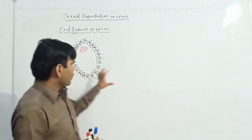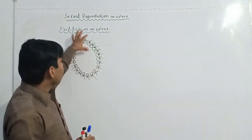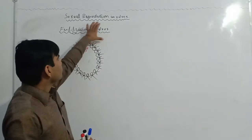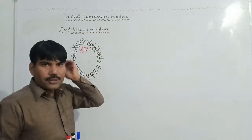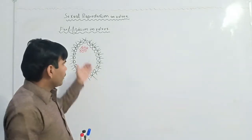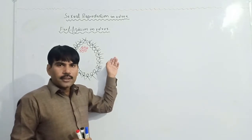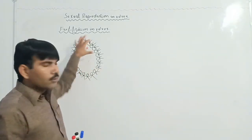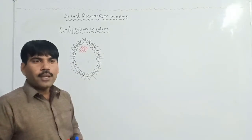In the last lecture we studied about sexual reproduction and asexual reproduction, but in this lecture we will study about how fertilization in Volvox occurs.